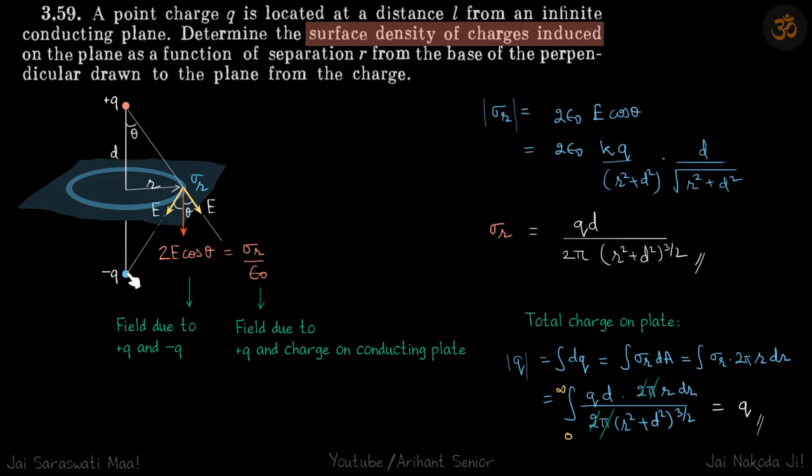This is the electric field due to plus q and minus q, which we have kept there. But in reality, it is not there—in reality, we have a plane. We can compare this electric field to the electric field generated in front of the plane. If this conducting plane has a charge density sigma_r, then the electric field just in front of a conducting body is sigma_r by epsilon.